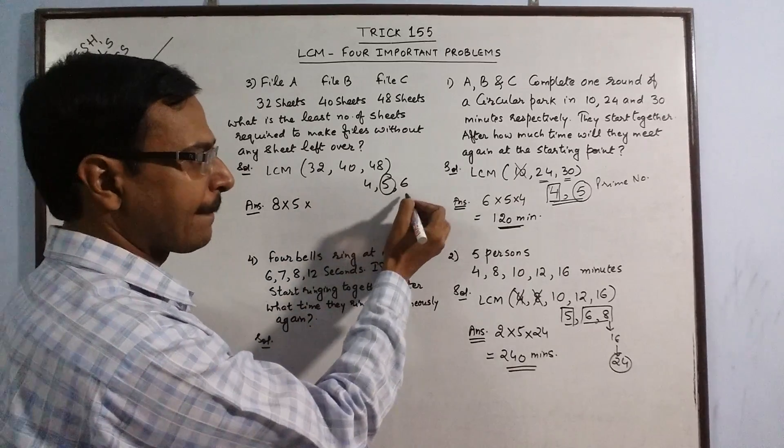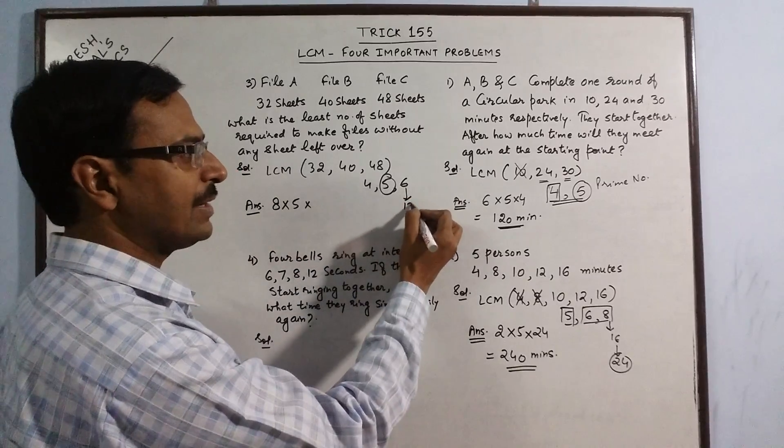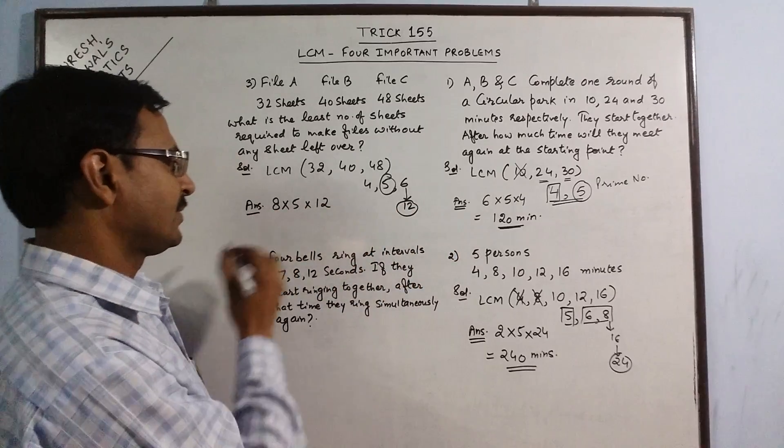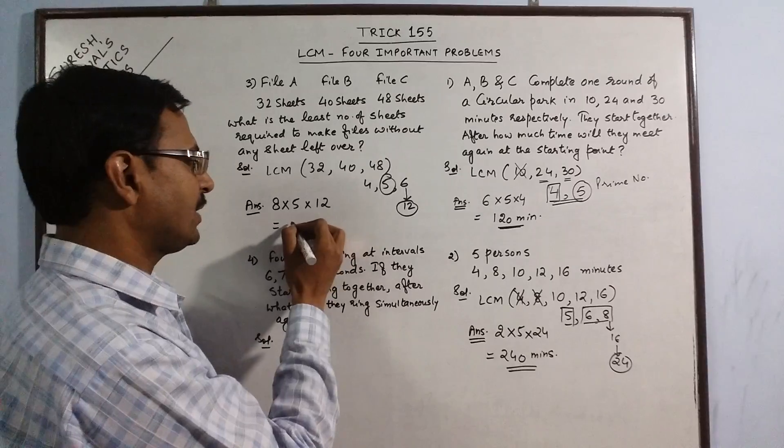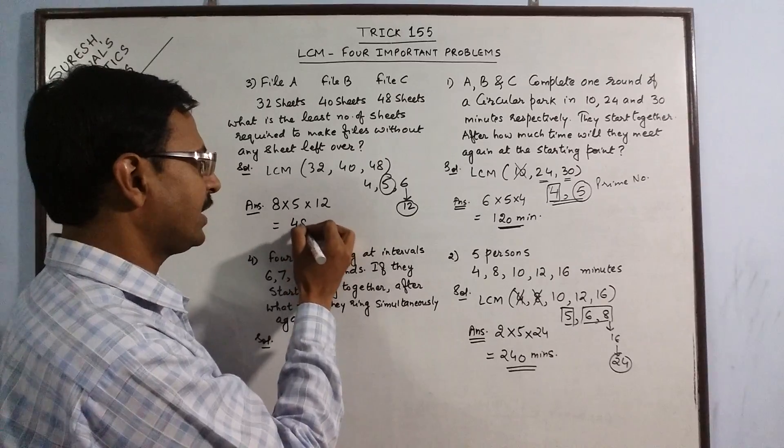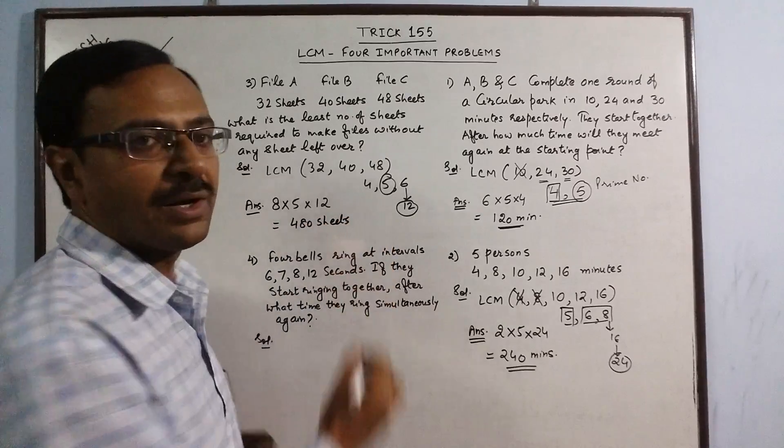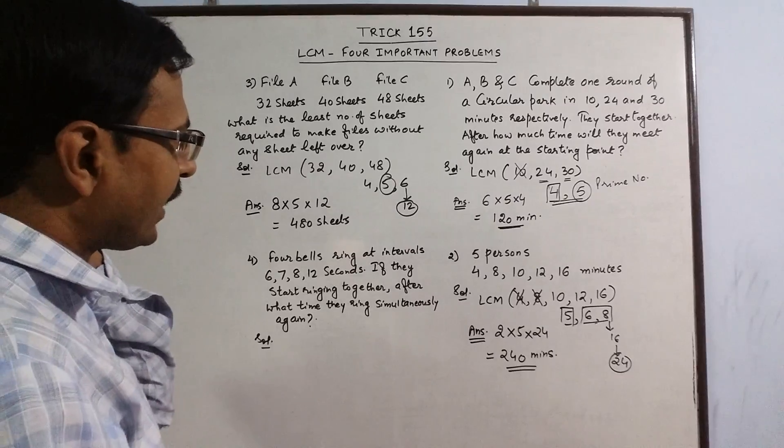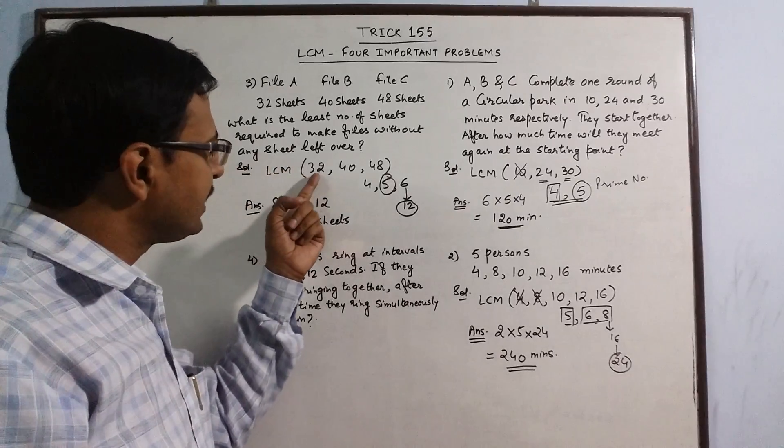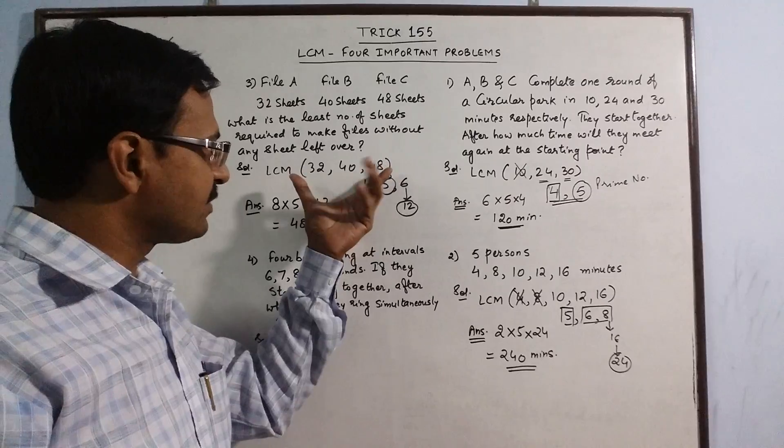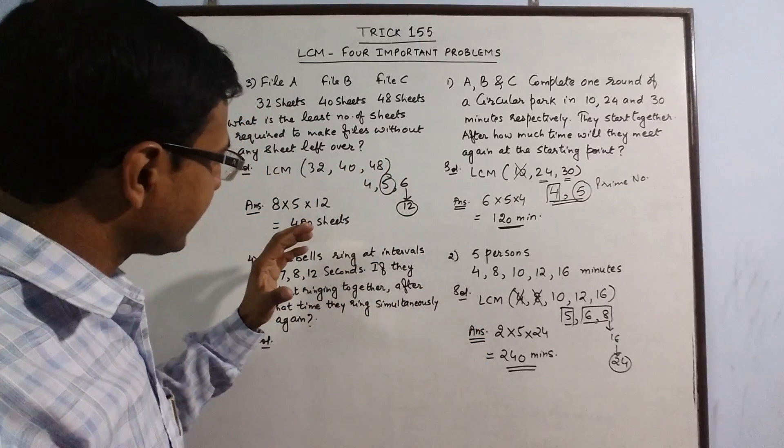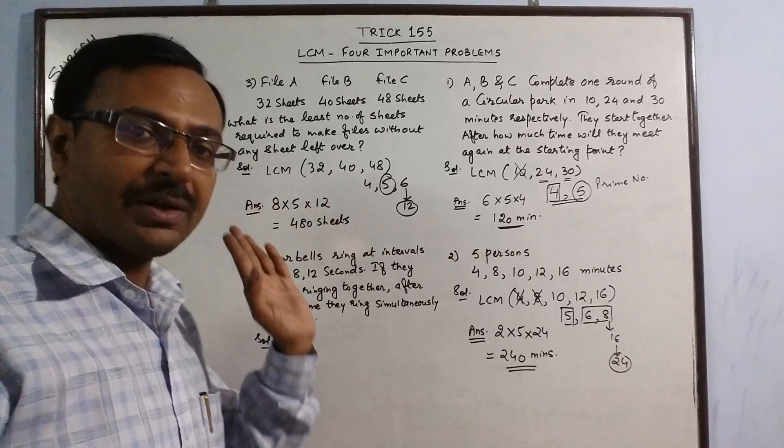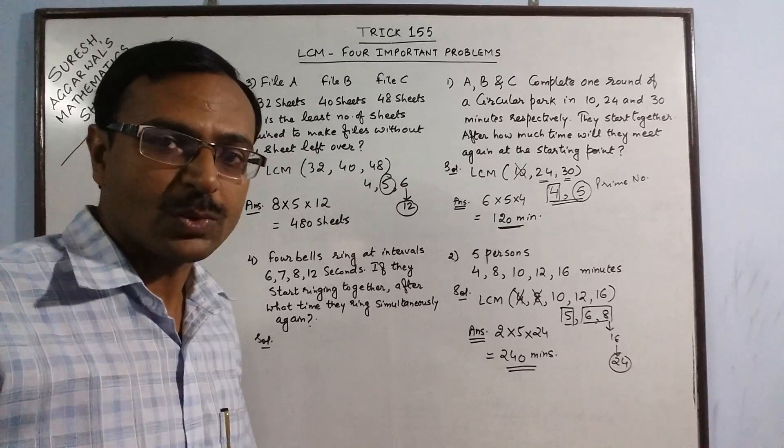4 does not divide 6. So count the multiples of 6: 12. Now 4 divides 12. So 12 will come in the answer. So 8 fives are 40 into 12 is 480 sheets is your required answer. Observe that little bit of understanding of these numbers and the divisibility rules and understanding of prime number being a factor of the LCM is required to answer this question orally.